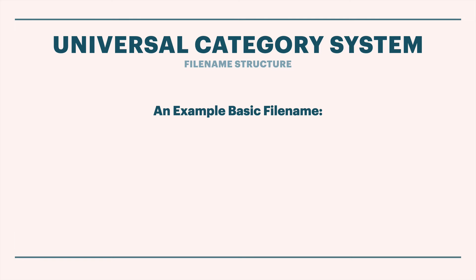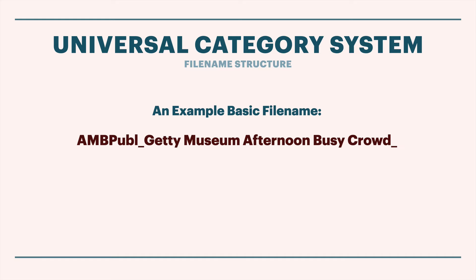Let's look at a basic file name and build it out piece by piece. At the head of our file name, we'll put the cat ID. In this case, we are going to define an ambience public place. By consulting the list or using one of the tools, we know that the cat ID for this is AMBIENCE_PUBL followed by an underscore. That's the cat ID placed at the head of the file name - anybody who references this file knows immediately that it's an ambience public place. Then we're going to give it a brief description - the effects name. In this case: Getty Museum Afternoon Busy Crowd. Five words tells us quite a bit of information about the sound. We're basically defining a pretty good explanation of what the sound file is without having to listen to it.